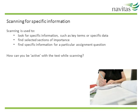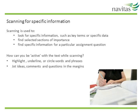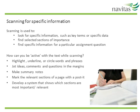The next phase is to scan the text to look for specific information. Scanning is particularly useful when you have a rough idea about a topic you want to include in your assignment and you are looking for information about that topic. Scanning involves running your eyes over the text without reading in detail. When scanning, you should read quickly and be active with the text. Active reading involves activities such as highlighting, underlining or circling words and phrases, jotting ideas, comments and questions in the margins, making summary notes, marking relevant sections with a post-it, and developing a system that shows which sections are most important or relevant.